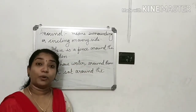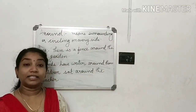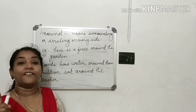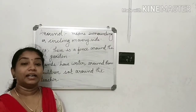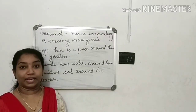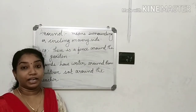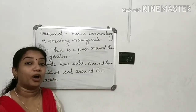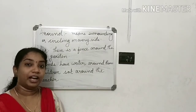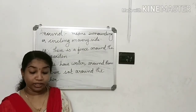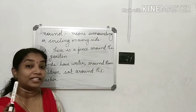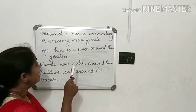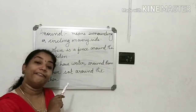Around also means circling something or someone. For example: Earth moves around the sun — as you have studied in science, the earth is circling around the sun. They dance around the campfire — they were dancing in a circle around the campfire. So 'around' means surrounding or circling on every side.